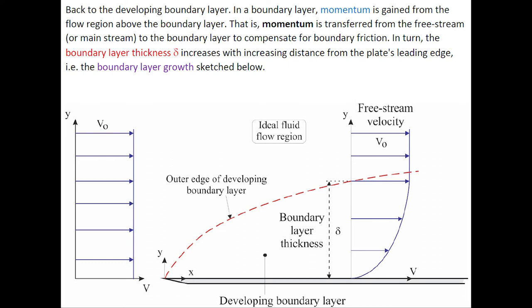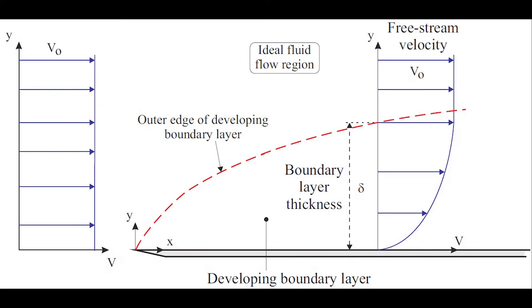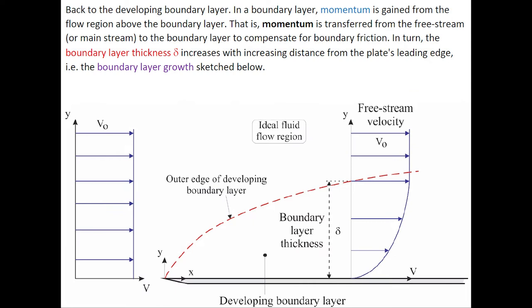Considering again our developing boundary layer, momentum is gained from the region above the boundary layer. That is, momentum is transferred from the free-stream to the boundary layer to compensate for boundary friction. In turn, the boundary layer thickness increases with increasing distance from the plate leading edge.